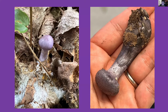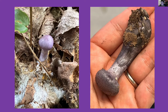They have a cortina — Latin for veil — which, instead of being the more substantial kind of veil like some Amanita species might have, is actually a cobwebby type of veil. It kind of stretches out and you can almost see the individual little fibers of it, which is really cool. Both of these mushrooms have that, and it's pretty much an identifying feature for Cortinarius.